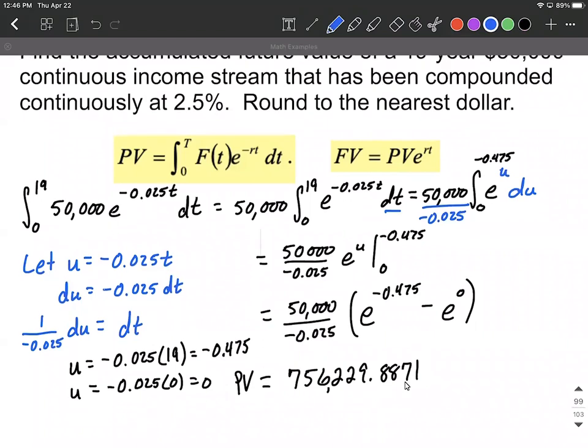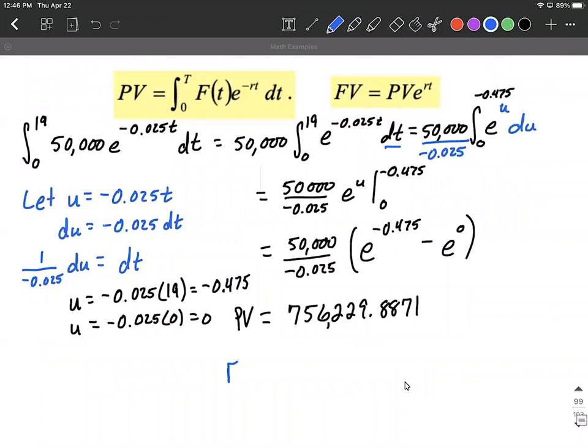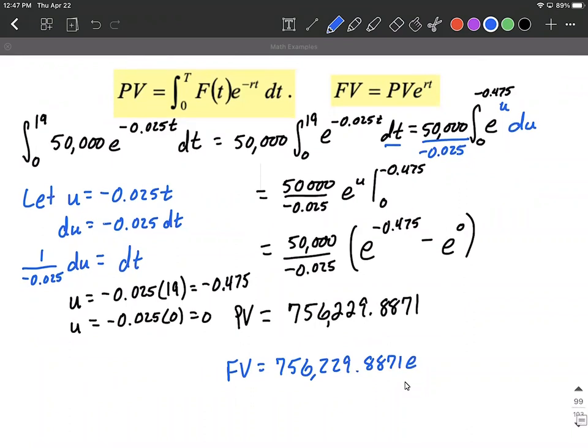So that's all that remains on this is plug into the future value formula. So again, it's this entire number goes in for our present value PV. Then we want to multiply this by e raised to that same rate, 0.025 times t. In this case, our time frame is going to be 19 years in the future. We want to know what this is worth. So I got this to be $1,216,028 rounded to the nearest dollar.